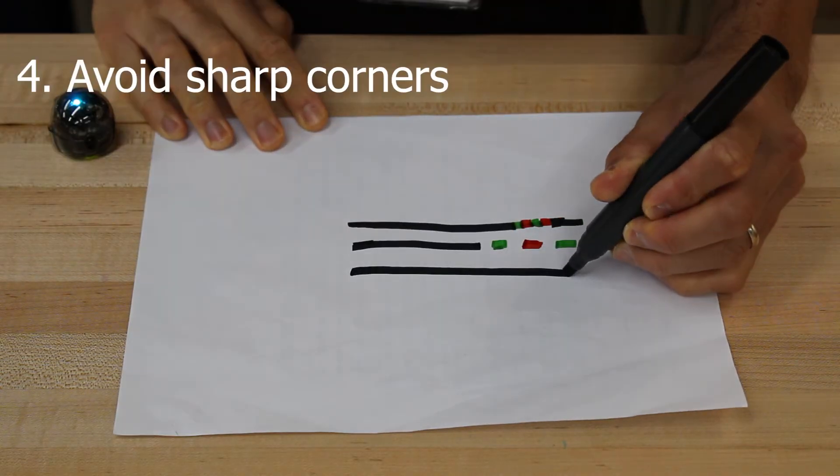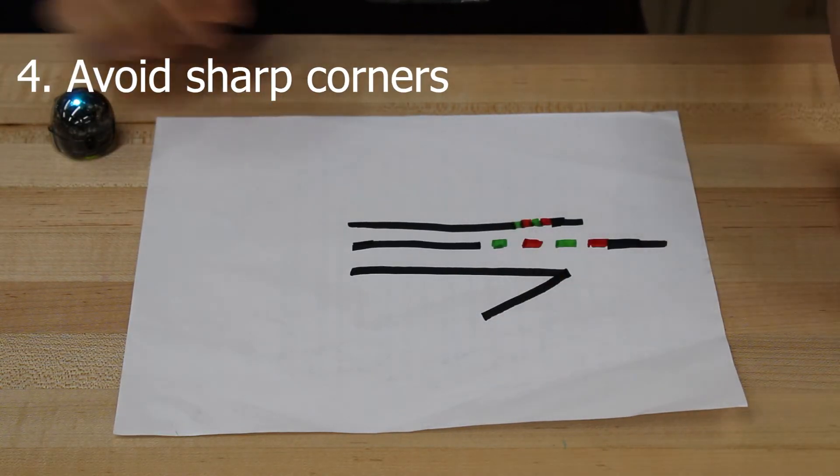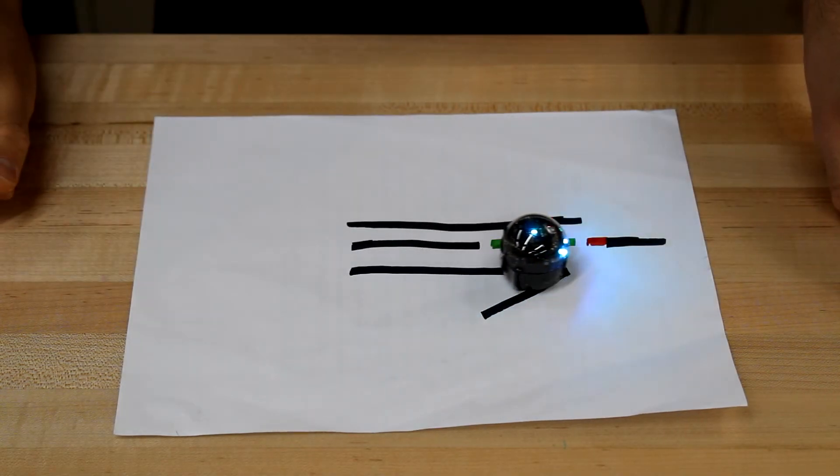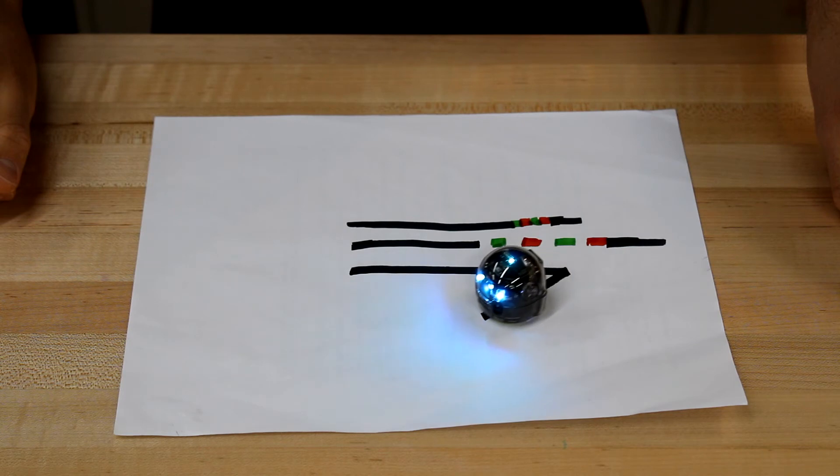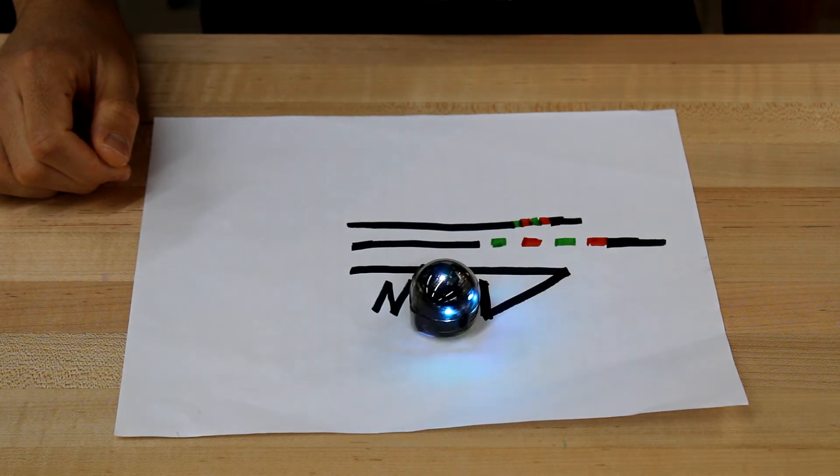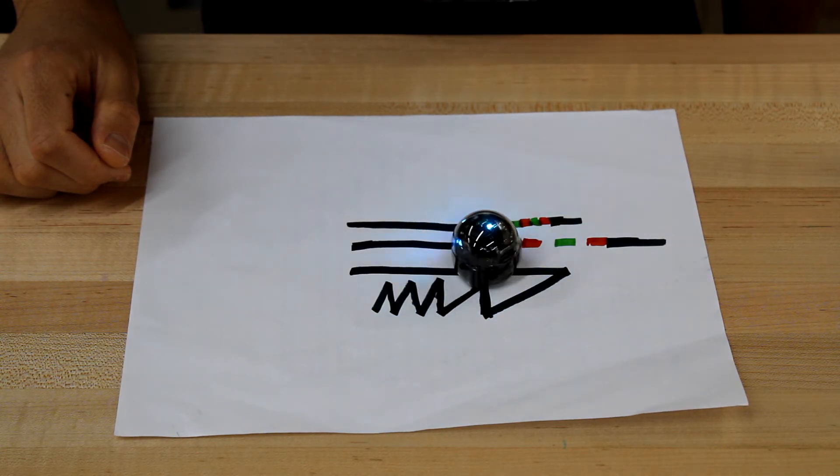Number 4. Avoid sharp corners. If two lines are too close together, you might find Evo going off the rails and moving in a direction you didn't intend. Too many sharp angles too close together can set Evo on the wrong path.